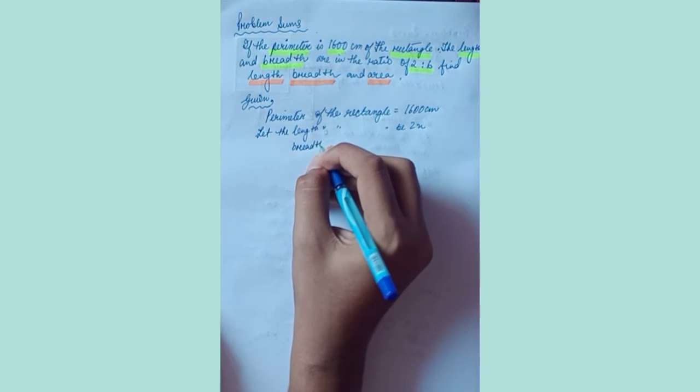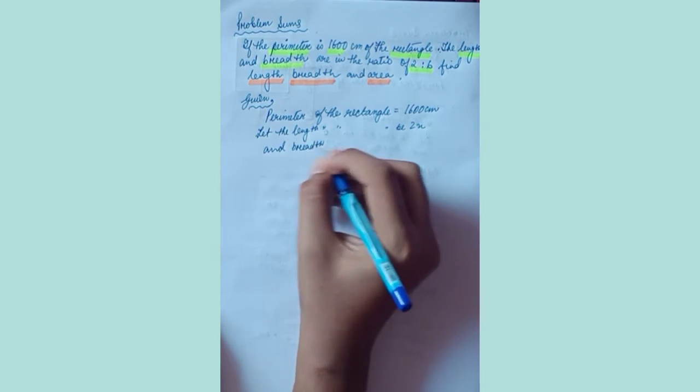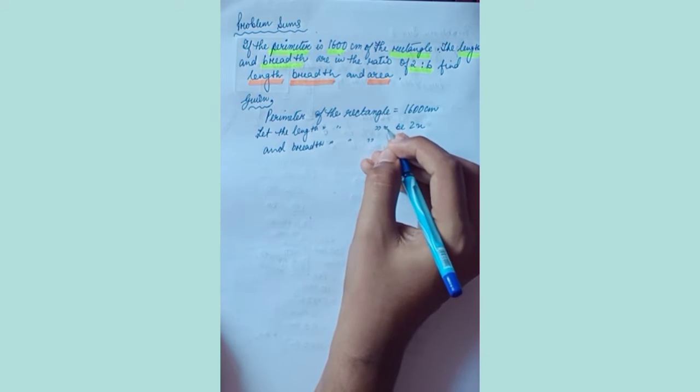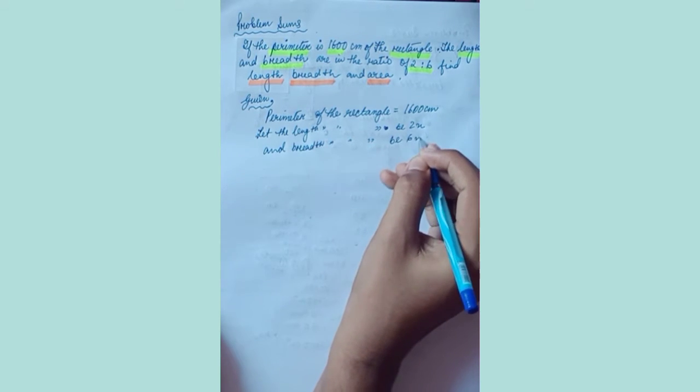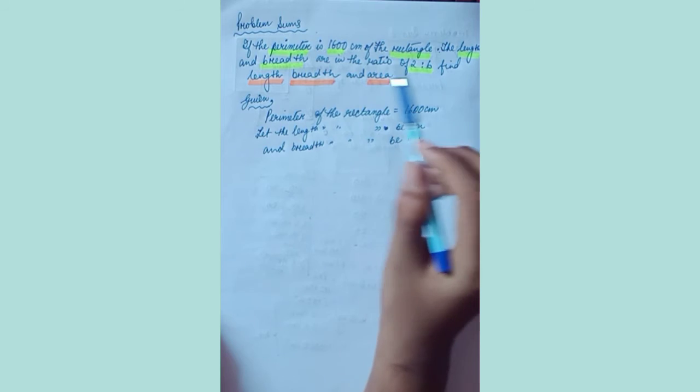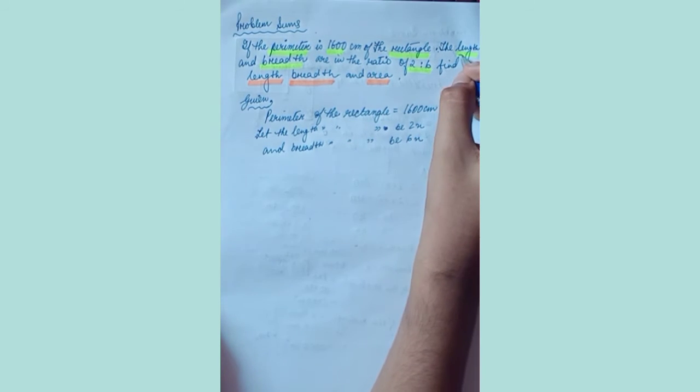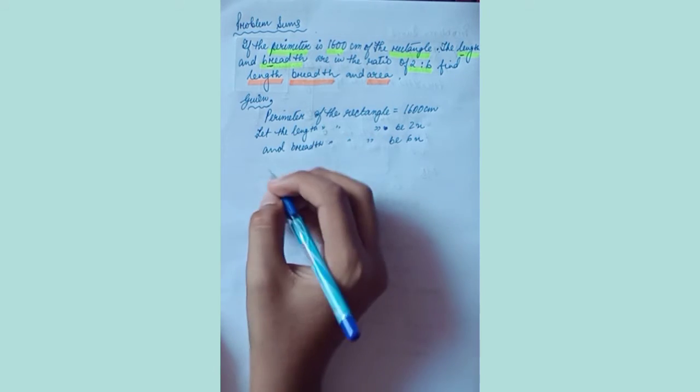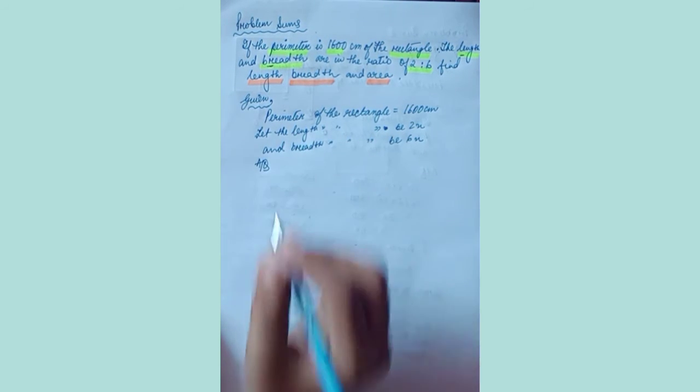And breadth of the rectangle be 6x. So if it was said that breadth and length, then first you have to take breadth then length. You have to see these two important words, okay? So according to the question, we all know that...